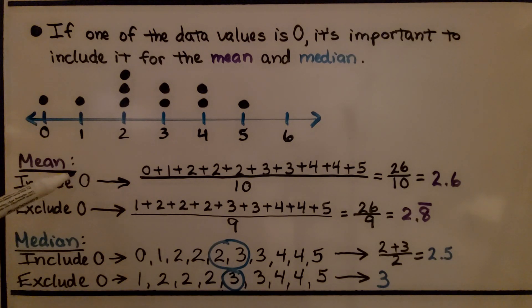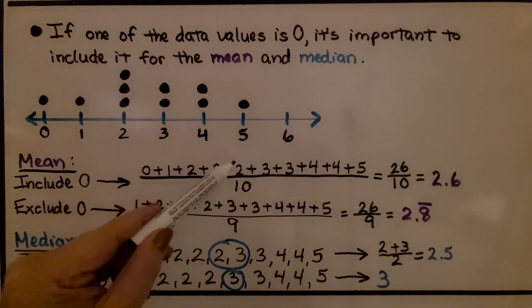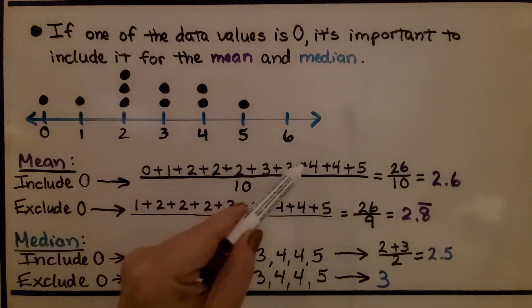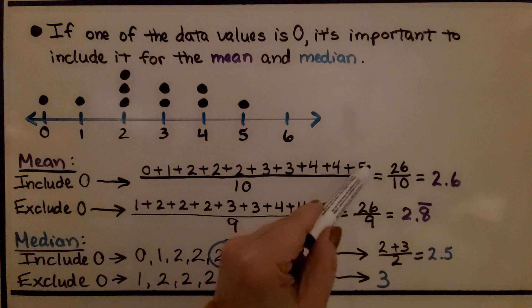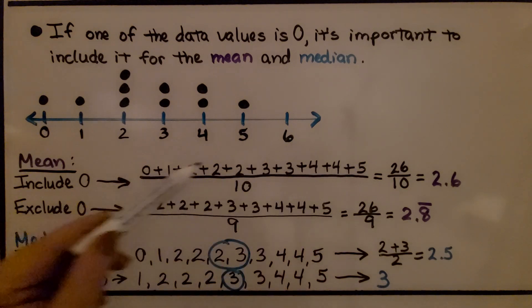For the mean, we include the zero. That means we need to add zero plus one plus two plus two plus two plus three plus three plus four plus four plus five. And then we're going to divide it by ten because there's ten numbers, ten addends.